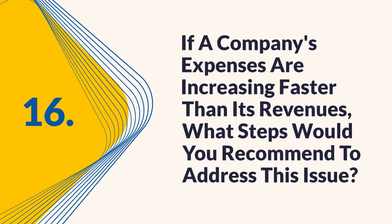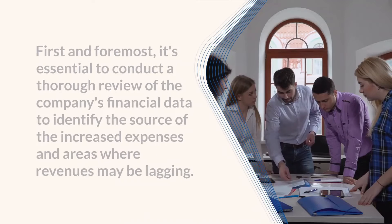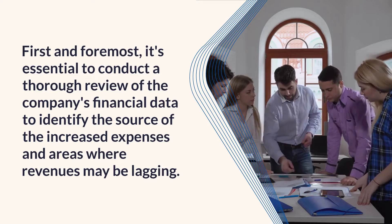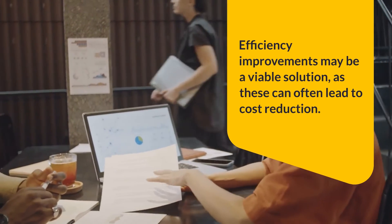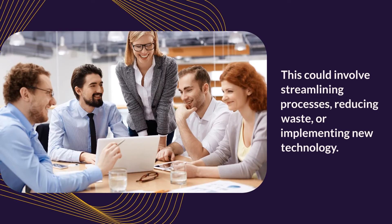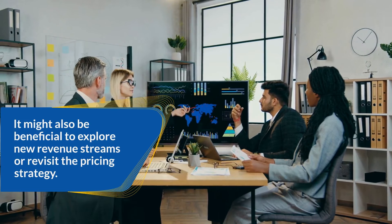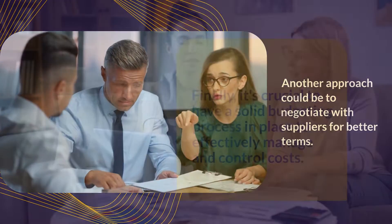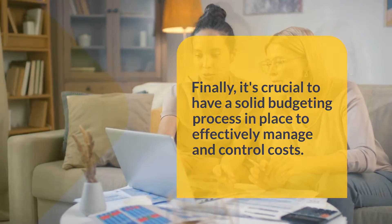Question 16: If a company's expenses are increasing faster than its revenues, what steps would you recommend to address this issue? First, it's essential to conduct a thorough review of the financial data to identify the source of increased expenses and areas where revenues may be lagging. Efficiency improvements — such as streamlining processes, reducing waste, or implementing new technology — can often lead to cost reduction. It might also be beneficial to explore new revenue streams, revisit the pricing strategy, or negotiate with suppliers for better terms. Finally, having a solid budgeting process in place is crucial to effectively manage and control costs.